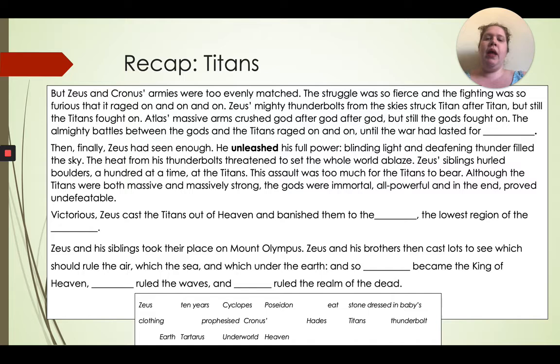This assault was too much for the titans to bear. Although the titans were both massive and massively strong, the gods were immortal, all-powerful, and in the end proved undefeatable. Victorious, Zeus cast the titans out of heaven and banished them to [Tartarus], the lowest region of the [underworld]. Zeus and his siblings took their place on Mount Olympus. [Zeus] became the king of heaven, [Poseidon] ruled the waves, and [Hades] ruled the realm of the dead.